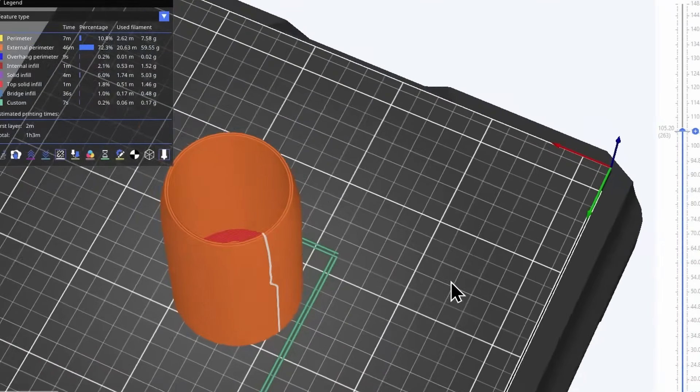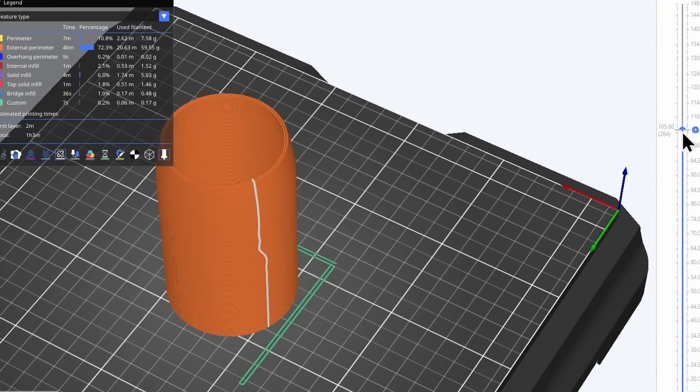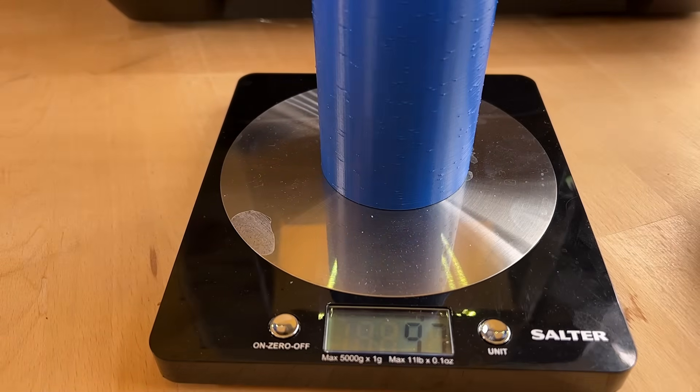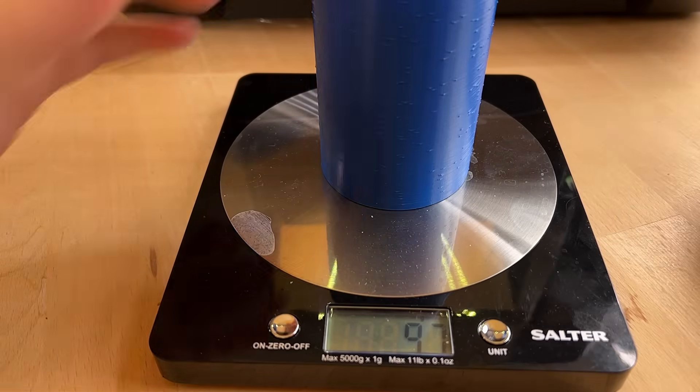The test specimens are these bullet-shaped prints that are hollow with a solid shell of different thicknesses to simulate the hull. The primary way I'm going to quantify waterproofness is by weighing each sample before and after testing to see how much water they've taken on. The smaller the number, the better.